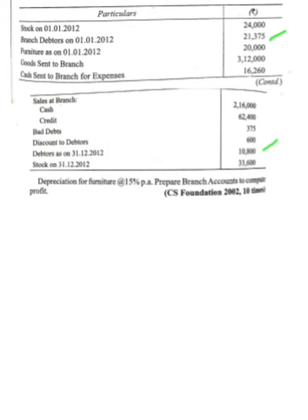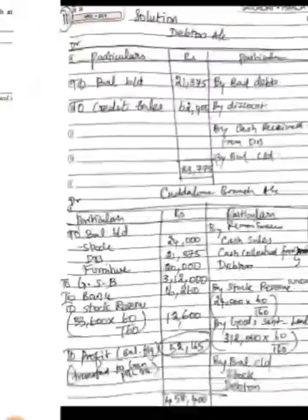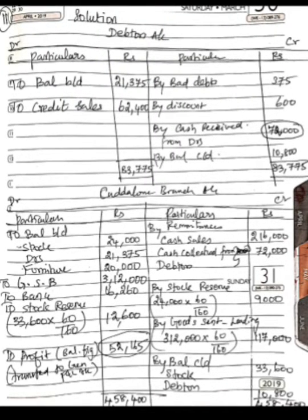Since opening debtors, closing debtors, cash sales, credit sales, bad debts, and discount data are all given, let us proceed with the solution by first preparing the debtors account to find out the cash received from debtors. In the debtors account — debit side particulars and rupees, credit side particulars and rupees. The opening balance of debtors comes on the debit side: 21,375.